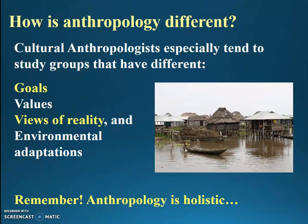You might be saying to yourself: well, history, psychology, sociology — they all study humans. And that's true, they do. But anthropology is a little bit different. History focuses on humans in the written past, but anthropology studies humans at all times, even in the pre-written past. Sociology focuses on Western cultures, but anthropology focuses on all cultures. Psychology, economics, and political science all focus on specific aspects of culture, but anthropology focuses on all aspects of culture. So it's a really different kind of discipline.